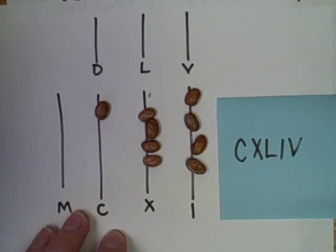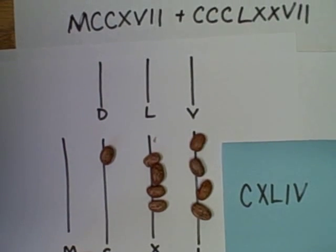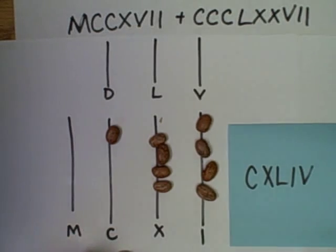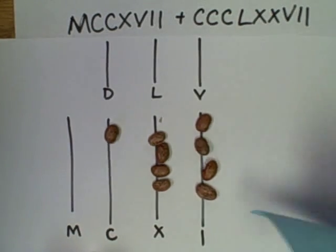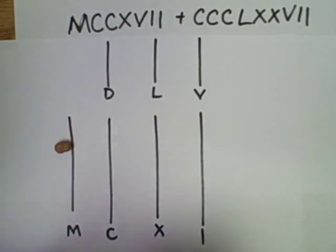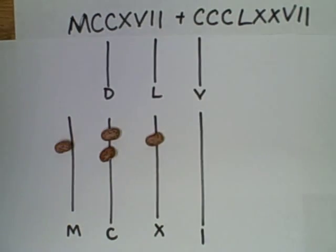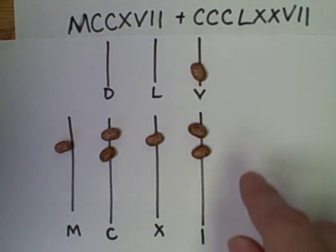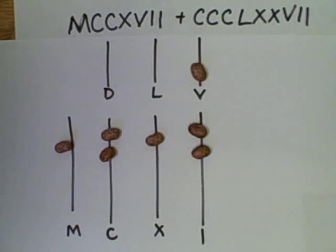We can add Roman numerals using the Roman numeral abacus, such as this statement here. I've got one M in the first addend, two C's, an X, a V, and two I's. No subtractive pairs in this numeral.